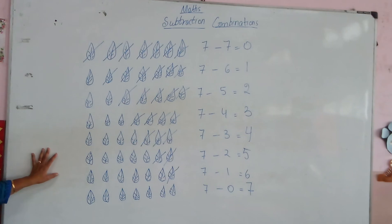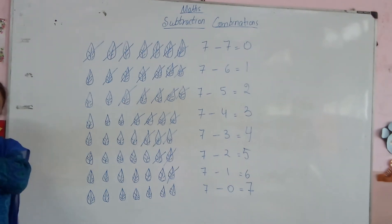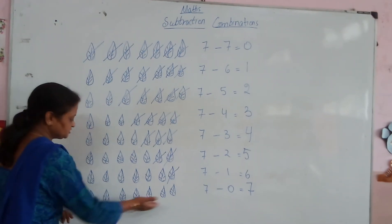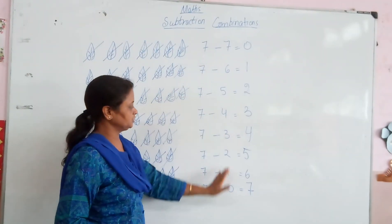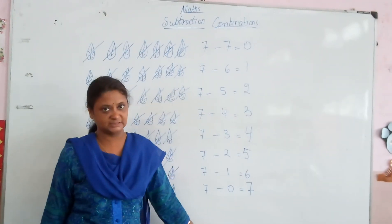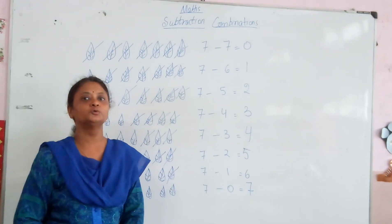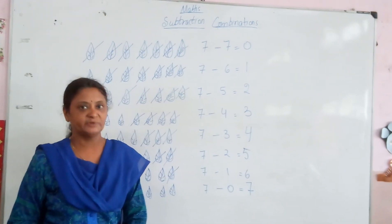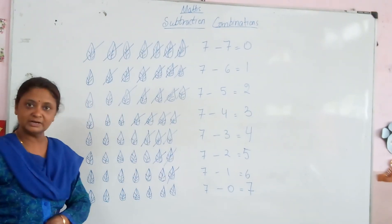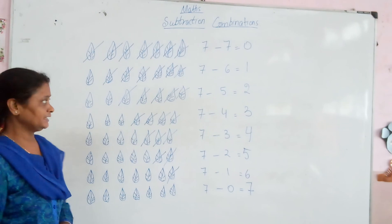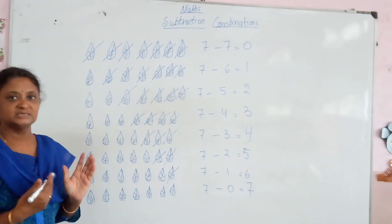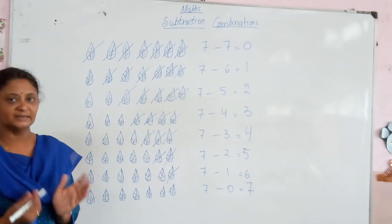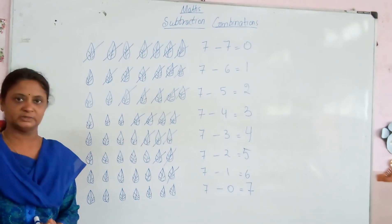These are the subtraction combinations of the number 7. The combinations are: 7, 6, 5, 4, 3 and so on. This is how you have to do the subtraction combinations of a given number. Just understand it, see it properly, and do it.